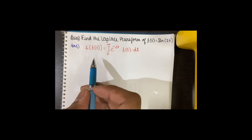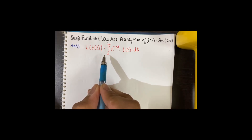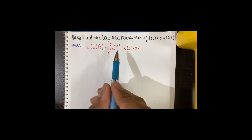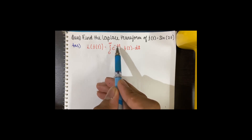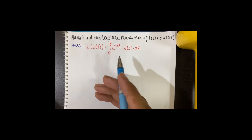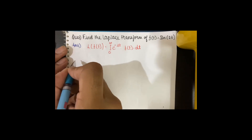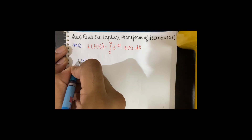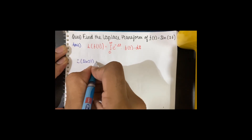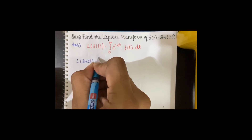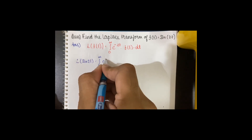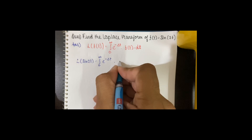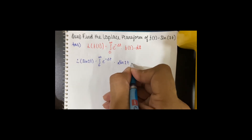The Laplace transform of f of t is always in the form: integral from 0 to infinity of e to the power minus st times f of t dt, where s is a constant and e to the power minus st is called the kernel. So the Laplace of sin 2t equals the integral from 0 to infinity of e to the power minus st times sin 2t dt.